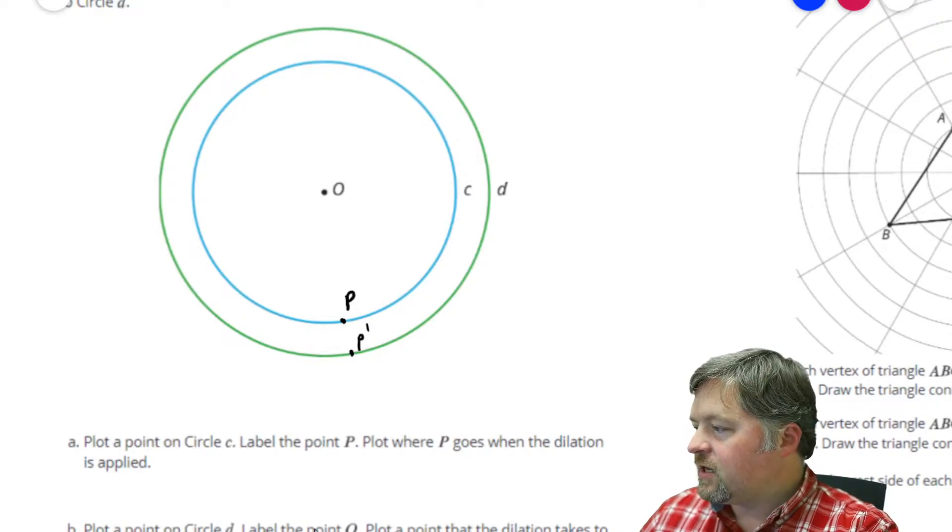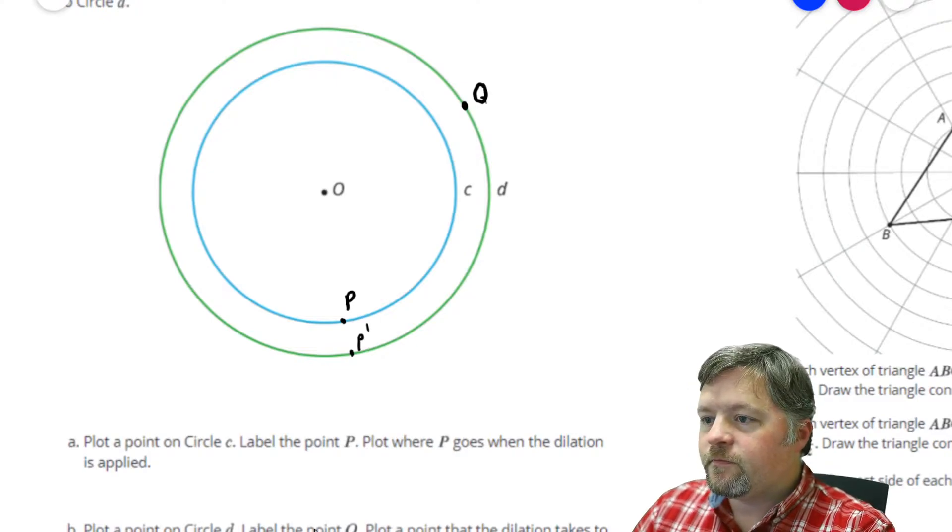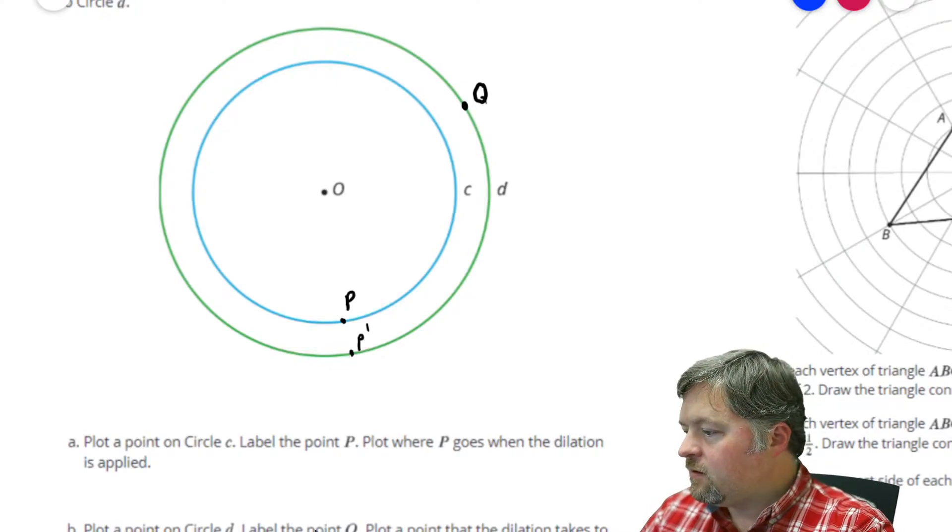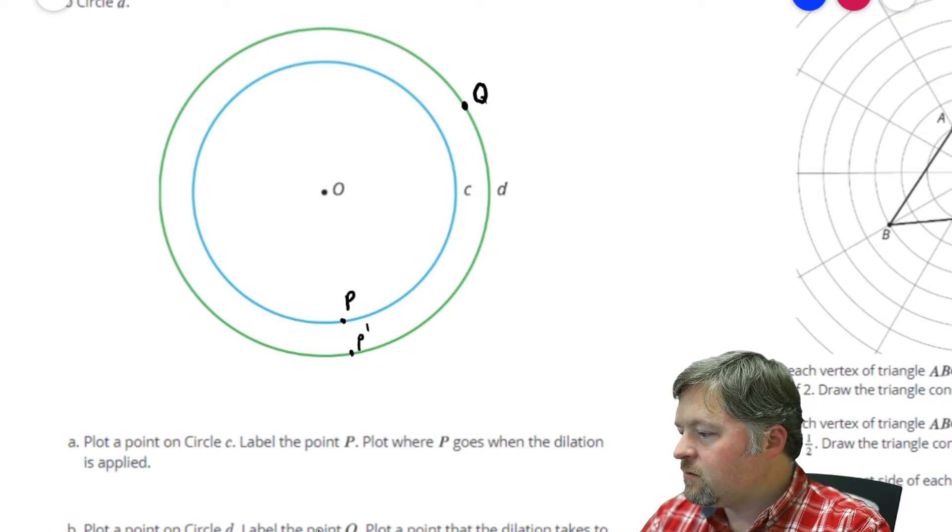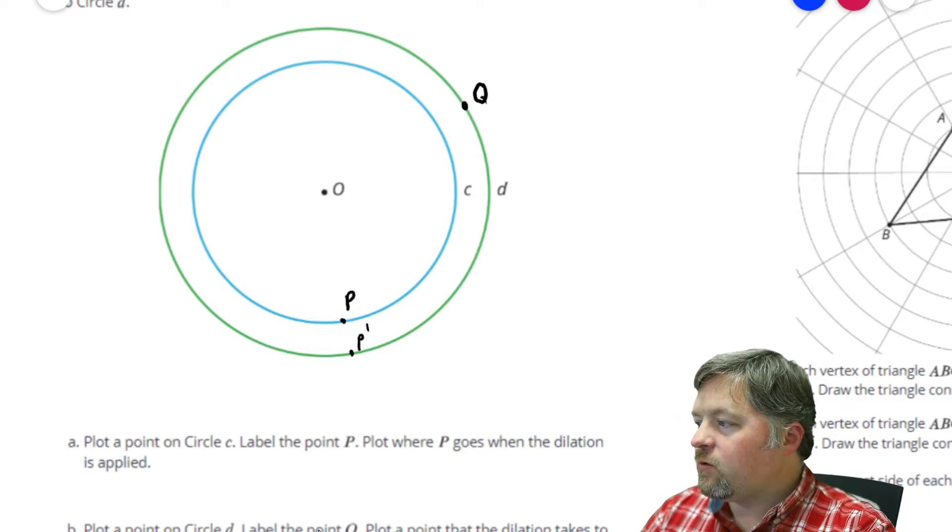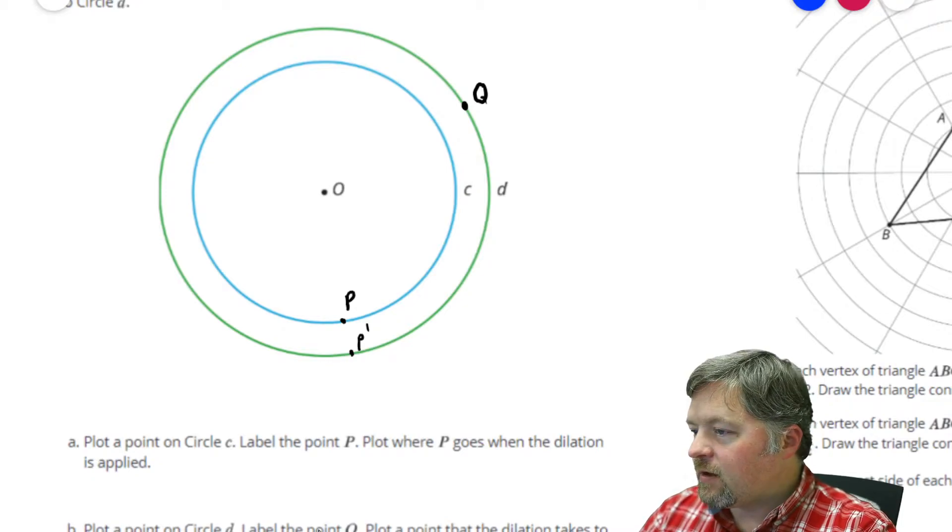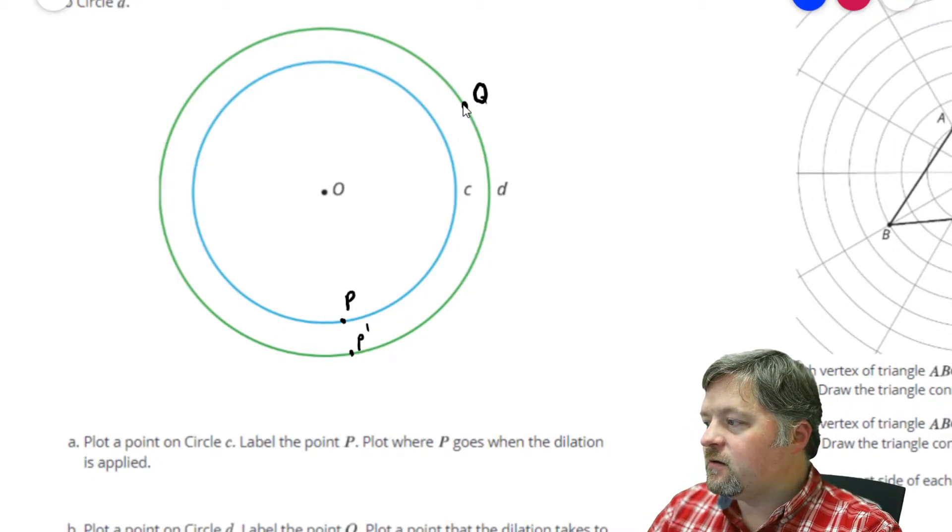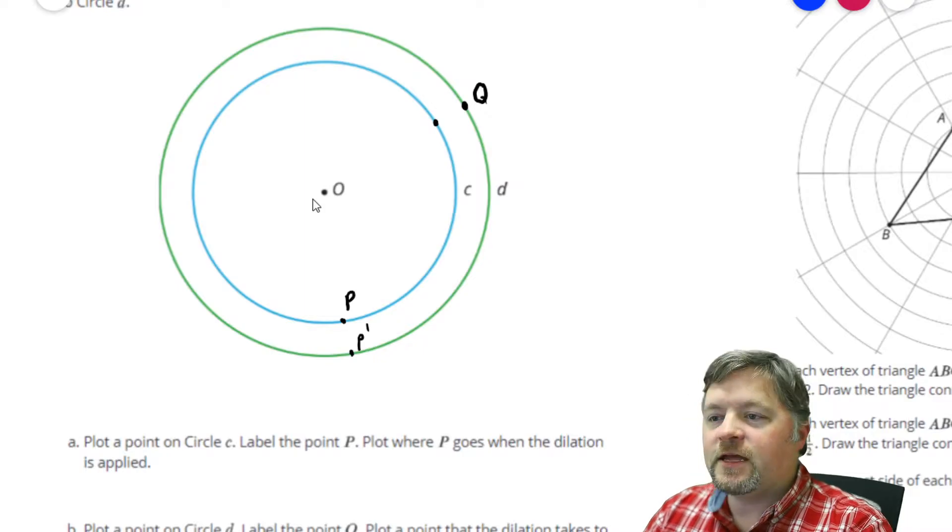Plot a point on circle D, label the point Q. Plot a point that takes the dilation to Q. So what point would bring it to Q? Again, we have to follow the line through the center of dilation. That would be here.